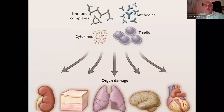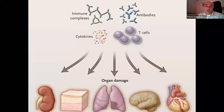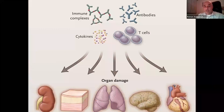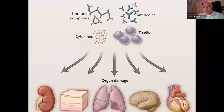The immune system gets activated, forming what's called immune complexes. Antibodies are produced, driving production of cytokines — signaling molecules. T cells, part of the immune system, get activated. Eventually, all of this abnormal immune response starts to attack our internal organs. This is different from a normal immune response to a virus or bacteria — here, the immune system goes into overdrive and attacks the body without any external invader.